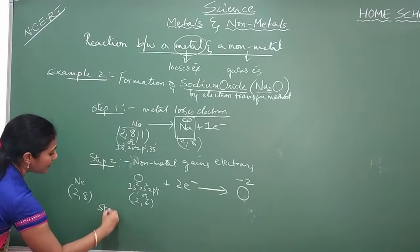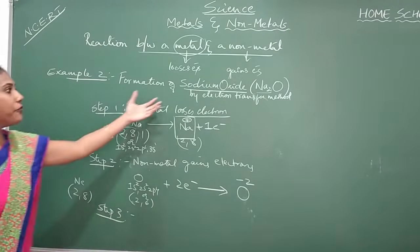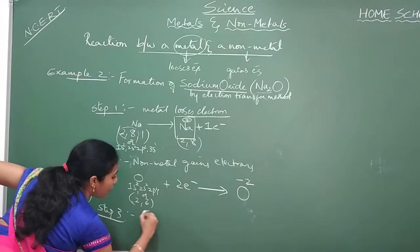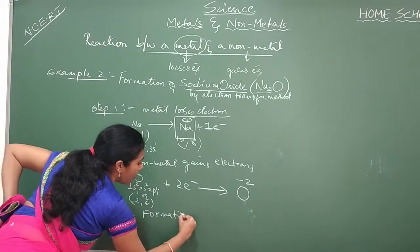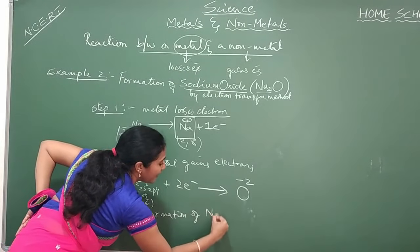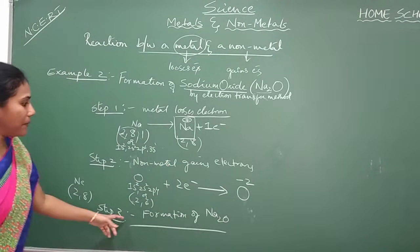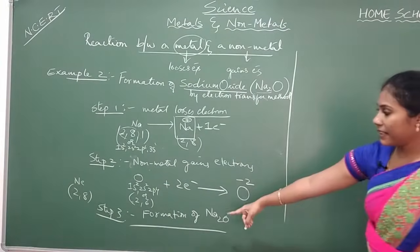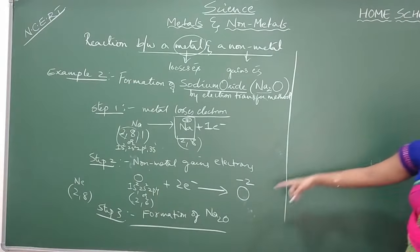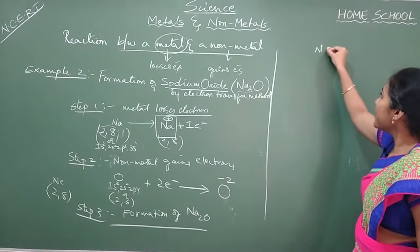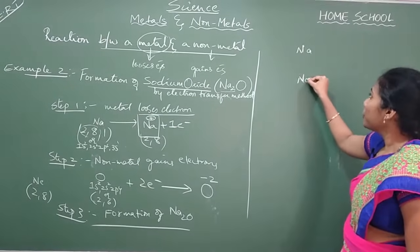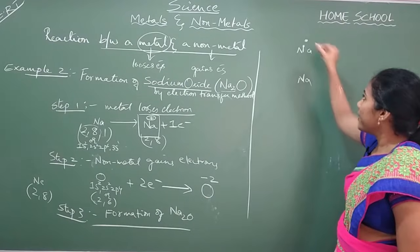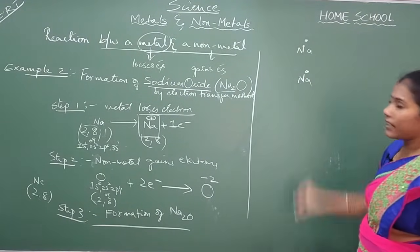Step number 3 — formation of Na₂O. So, 2 Na's are there now. Write it like this: 2 Na's. The dot structure of Na has 1 electron. Oxygen — 2 Na's are combining with 1 oxygen.